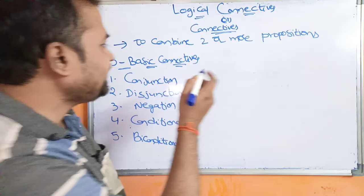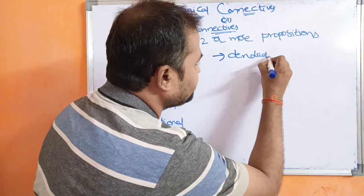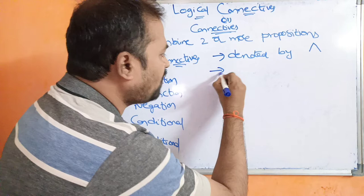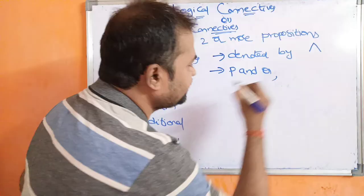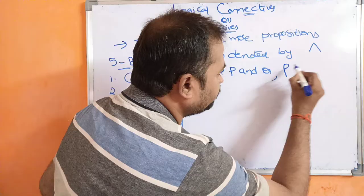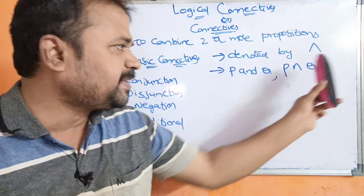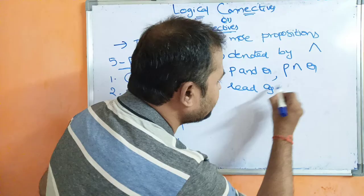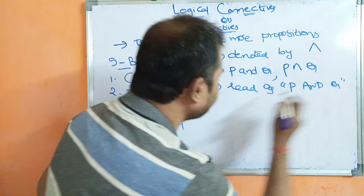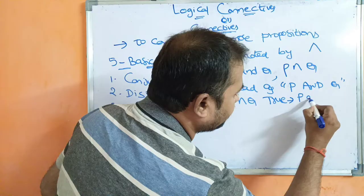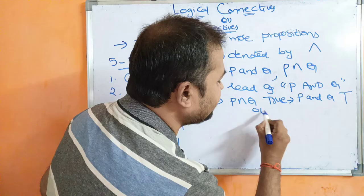The first one is conjunction. Conjunction is denoted by the AND symbol — the ∧ symbol, which is the inverse of V. If we have two propositions P and Q, then the conjunction is denoted by P ∧ Q, which is read as 'P and Q'. P ∧ Q returns true when P as well as Q is true. Otherwise, it retains false value.